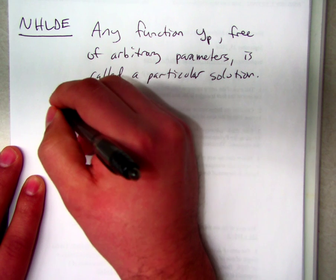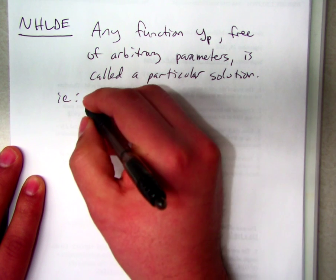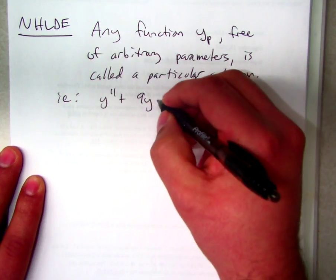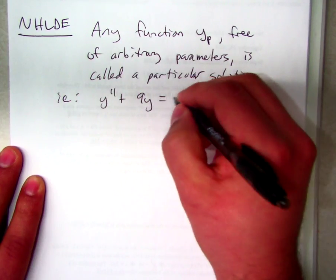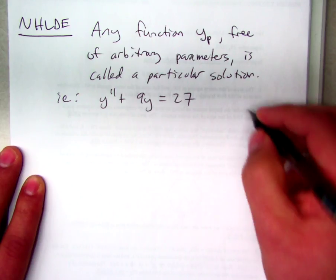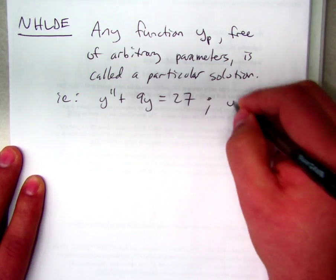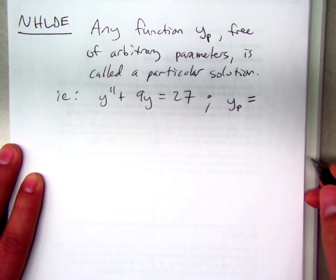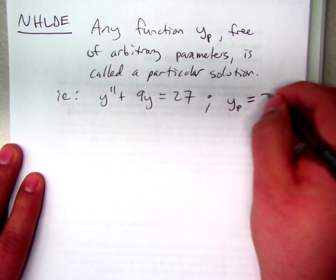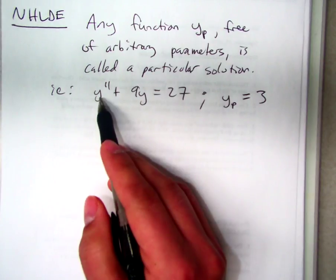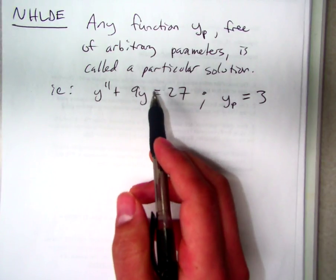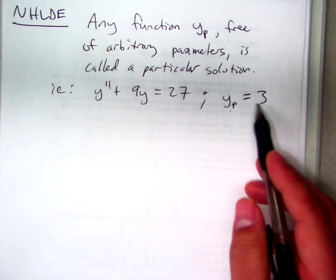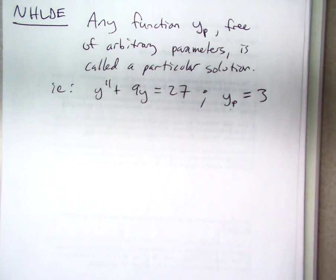It's called a particular solution. Quick one. If we have y double prime plus 9y equals 27. Anyone see a quick particular solution here? Y equals 3. Okay, so obviously the derivative here would be 0, but 9 times 3 is 27. So we say that this is a particular solution because there's no arbitrary parameters involved. It's 3. It's not like C1 times 3 or anything like that.